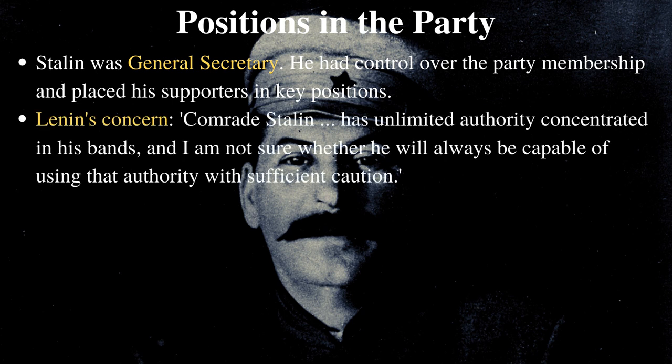Lenin himself had been concerned about the amount of power Stalin possessed and wrote the following in his final testament: 'Comrade Stalin has unlimited authority concentrated in his hands and I am not sure whether he will always be capable of using that authority with sufficient caution.'